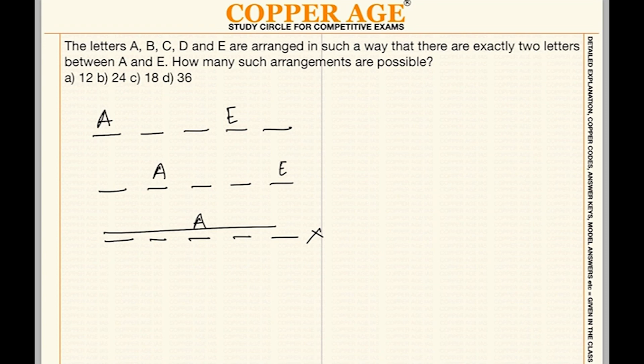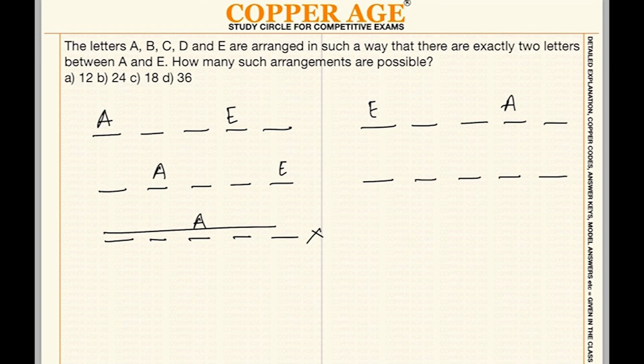Checking A and E positions: some placements are not possible, and other letters also cannot fit in certain spots. Going through all cases, there are totally four sets possible.